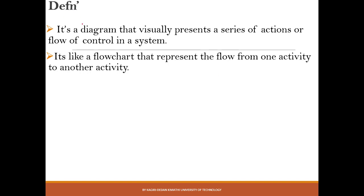An activity diagram is a diagram that through visual representation helps us show the series of actions or the flow of control within a particular system. For example, with an ATM, if a customer inserts a card and the ATM validates it, we can use an activity diagram to represent that series of actions — it is more or less like a flowchart showing the flow from one activity to another.